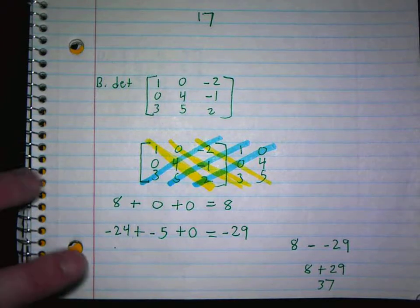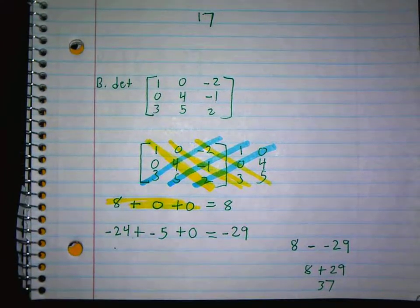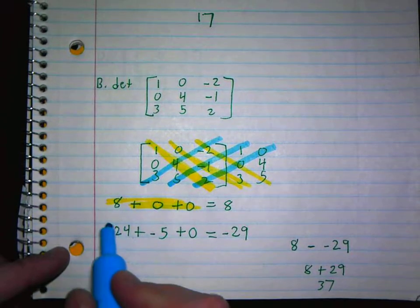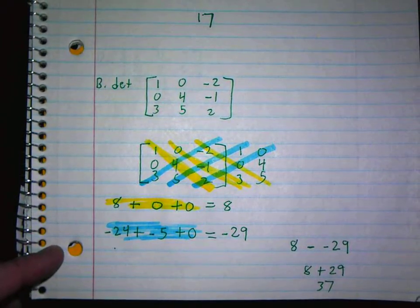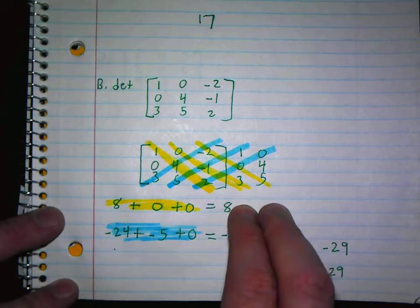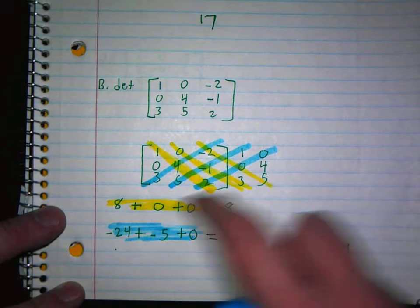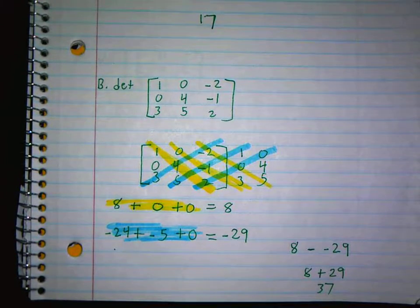Just to help our notes a little bit. This was from the yellow, and this was from the blue. To find the determinant of a 3 by 3, you copy the first two columns again. You go this way and add them. You go this way and add them. And then you subtract. That is all you do.